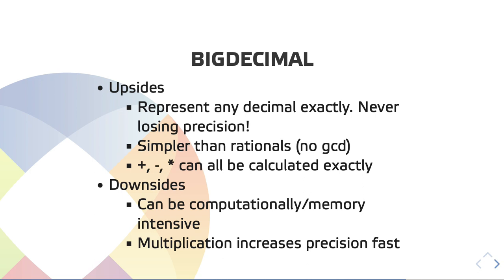What are the upsides of BigDecimal? BigDecimal can represent any decimal exactly, so we are never losing precision doing a lot of operations. It's also much simpler than rationals because we don't need to do GCD, and addition, subtraction, and multiplication can all be calculated exactly. The downsides of BigDecimal are that it can be very memory-intensive and computationally intensive. Multiplication also increases precision quite fast — you could have out-of-memory errors if you're manipulating a lot of BigDecimals with many multiplications.